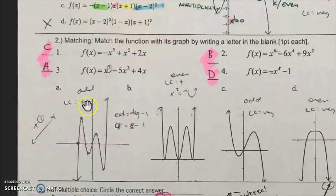One, two, three, four. Extremas is degree minus one, so if we have four extremas, that means we must have a degree of five.